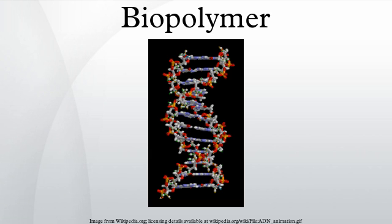In fact, as their synthesis is controlled by a template-directed process in most in vivo systems, all biopolymers of a type are alike — they all contain similar sequences and numbers of monomers and thus all have the same mass. This phenomenon is called monodispersity, in contrast to the polydispersity encountered in synthetic polymers. As a result, biopolymers have a polydispersity index of 1.